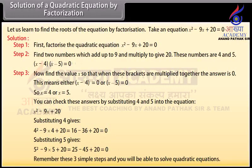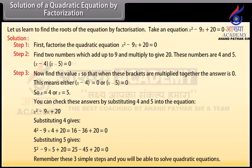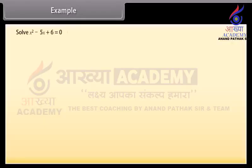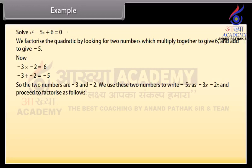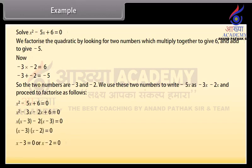Remember these three simple steps and you will be able to solve quadratic equations. For example, suppose we wish to solve x squared minus 5x plus 6 equals zero. We factorize by looking for two numbers which multiply to give 6 and add to give minus 5. Now, minus 3 times minus 2 equals 6 and minus 3 plus minus 2 equals minus 5. So the two numbers are minus 3 and minus 2. We write minus 5x as minus 3x minus 2x and factorize, giving x equals 3 or x equals 2. These are the two solutions.